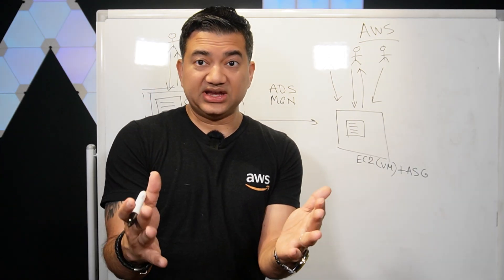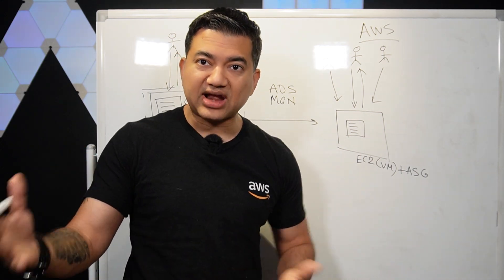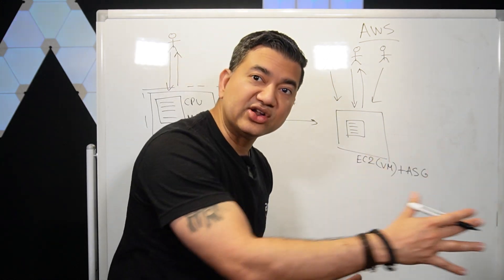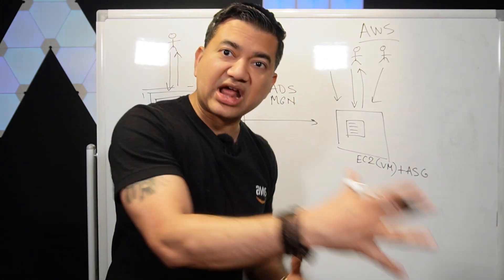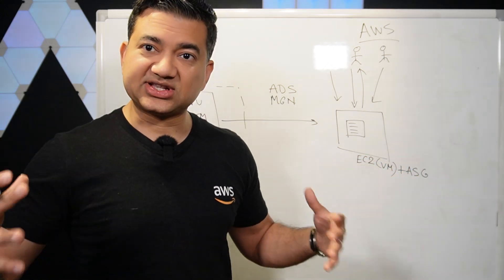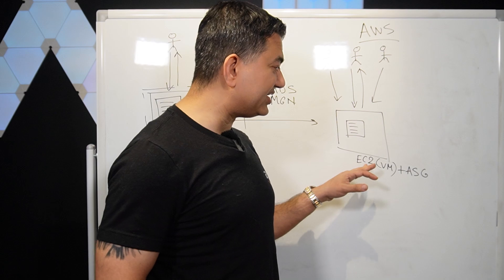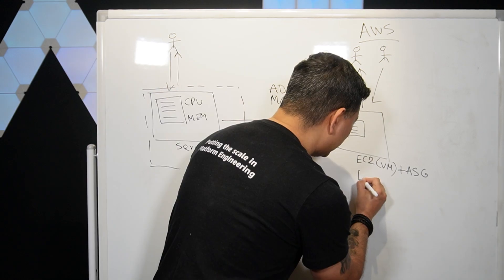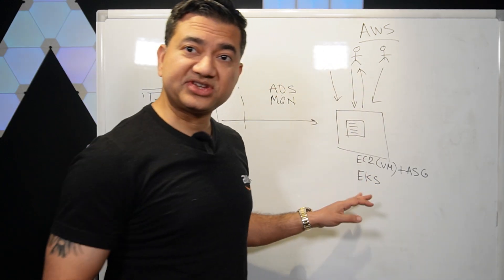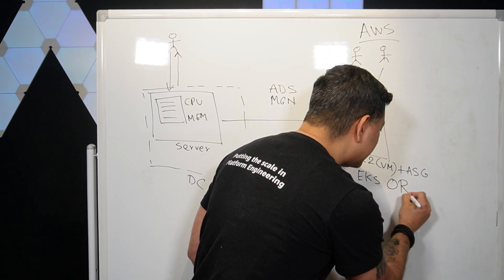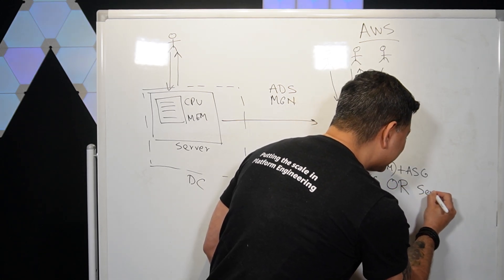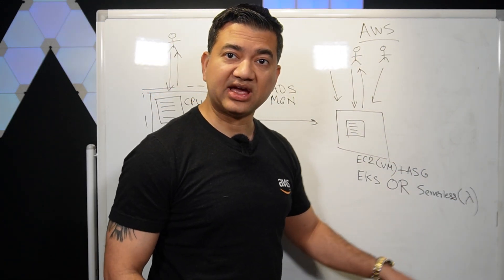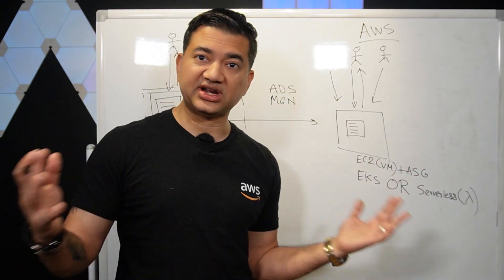If someone asks you in an interview how you're going to scale or run your application, everyone knows EC2 Auto Scaling Group — so you need to set yourself apart. In addition to studying EC2, you need to know at least one of these: Kubernetes via EKS (Elastic Kubernetes Service), or Serverless compute using Lambda. Learning EC2 and Auto Scaling Group is not enough anymore — interviewers expect you to know at least either Kubernetes or Serverless.